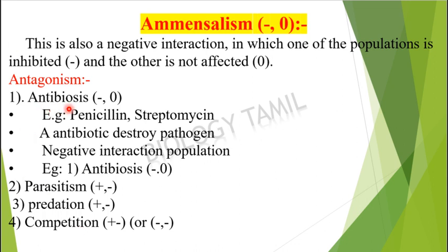The first type is Antibiosis. In Antibiosis, one population is inhibited and affected by another population. Examples include Penicillin and Streptomycin — these are antibiotics. The antibiotic destroys the pathogen in our body. The pathogen is affected negatively, while the antibiotic organism is not affected. This is Antibiosis.